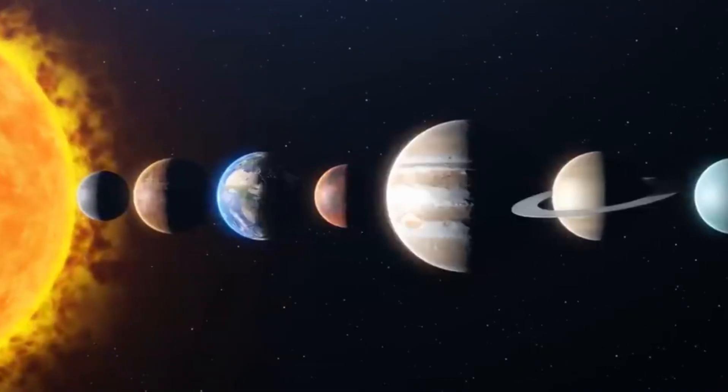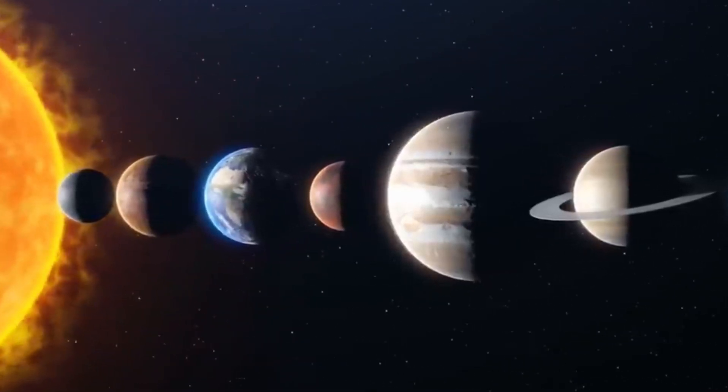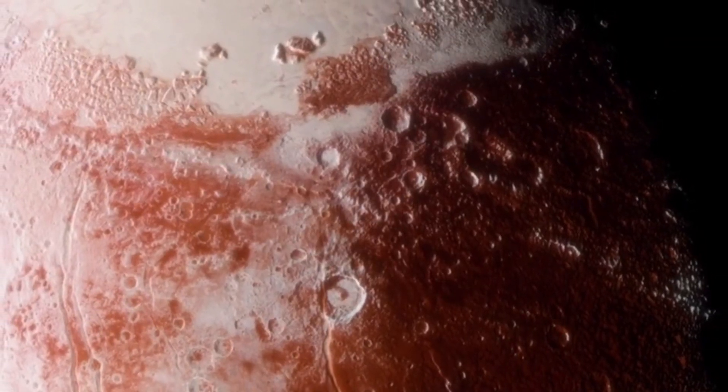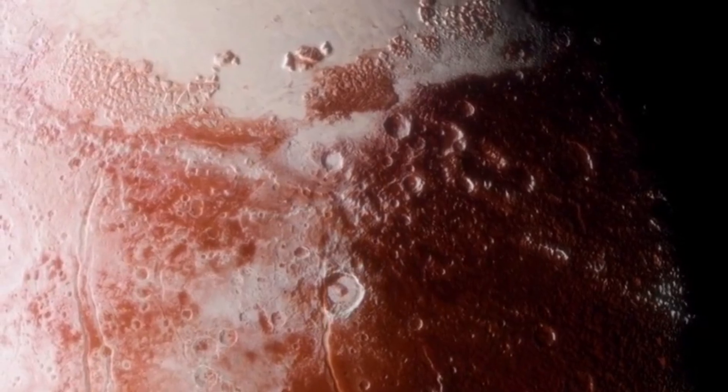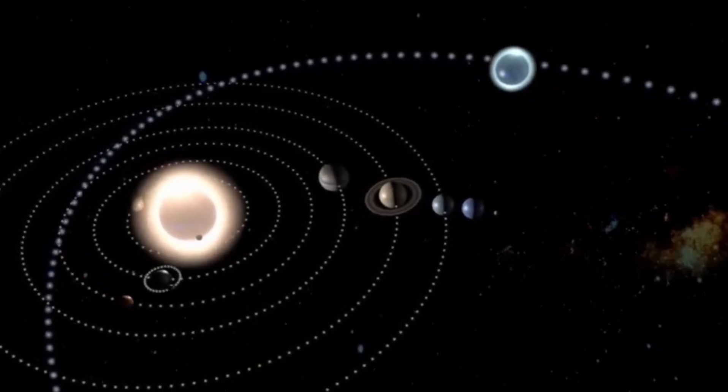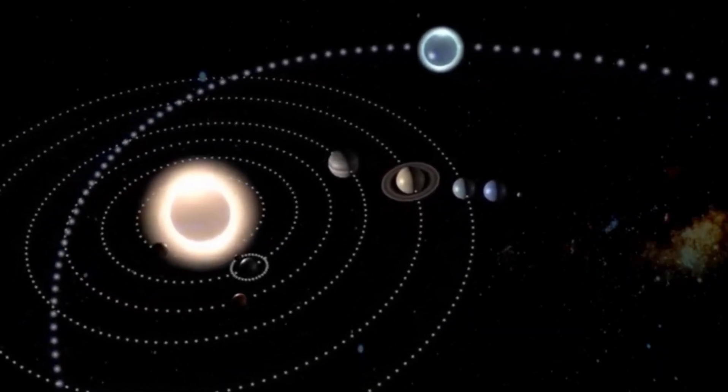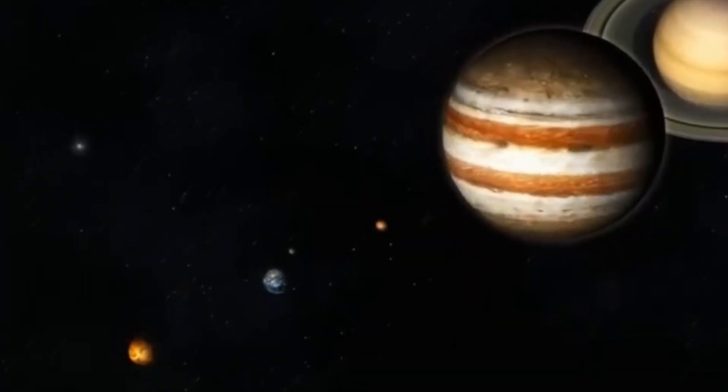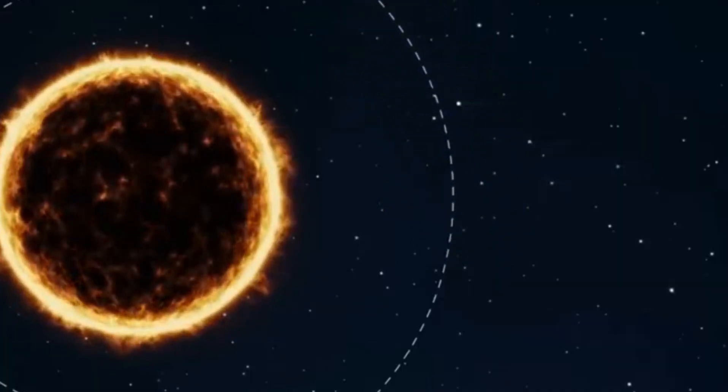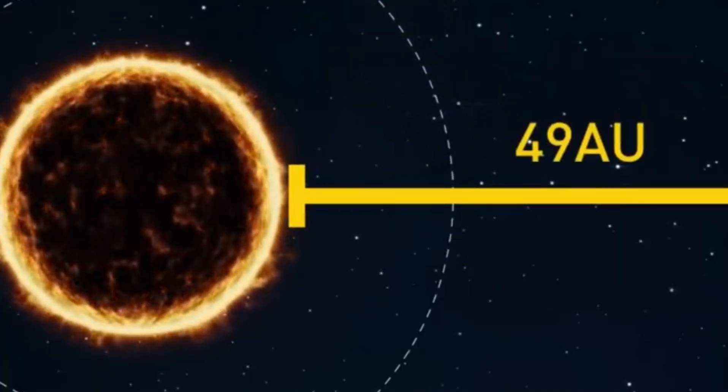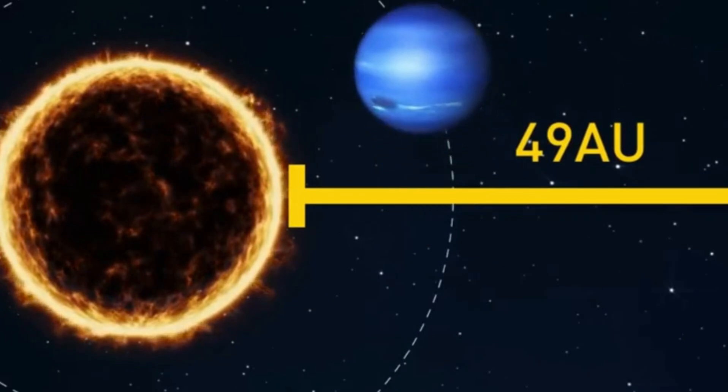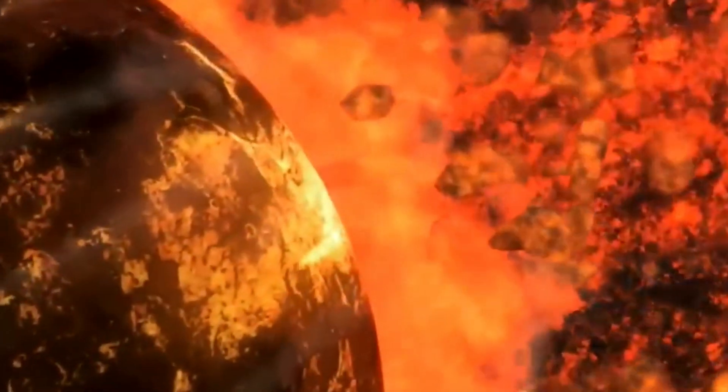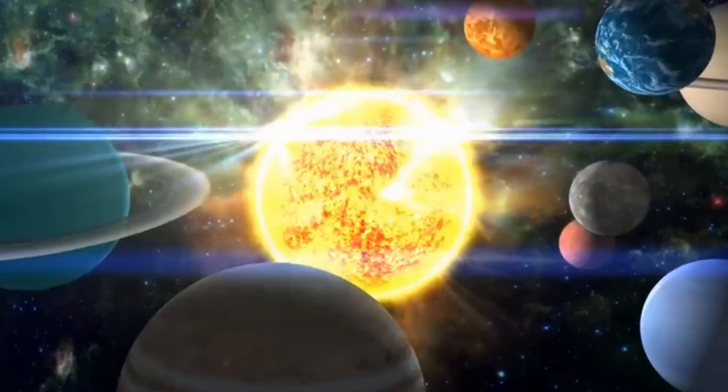For Pluto, especially with talks about it possibly crashing into Neptune in the future, understanding its orbit is really important. This gives us a clearer picture of the solar system's dynamic nature. The case of Pluto demonstrates how even the most seemingly unstable orbits can achieve the state of equilibrium through the complex interplay of gravitational forces and orbital mechanics. It also shows the importance of continuous observation and study of these phenomena to grasp our place in the universe better.